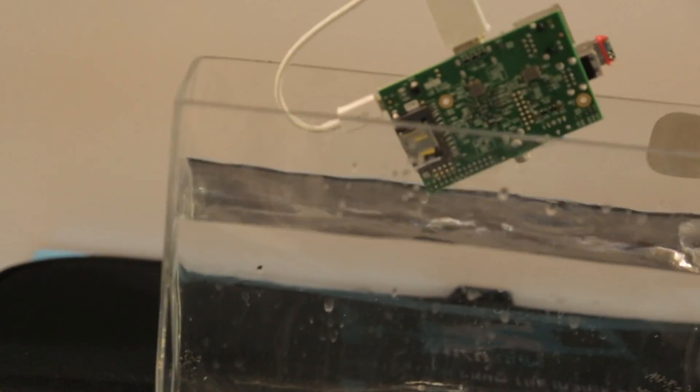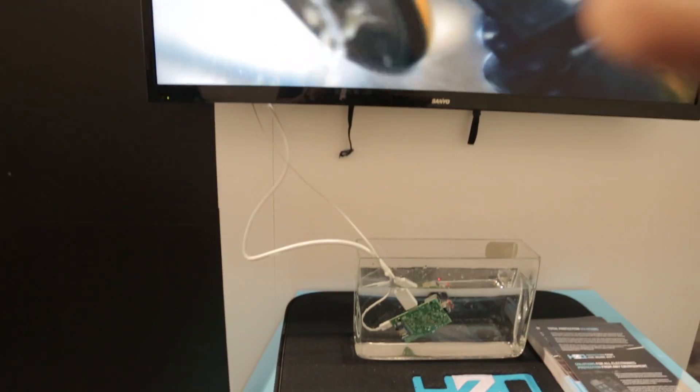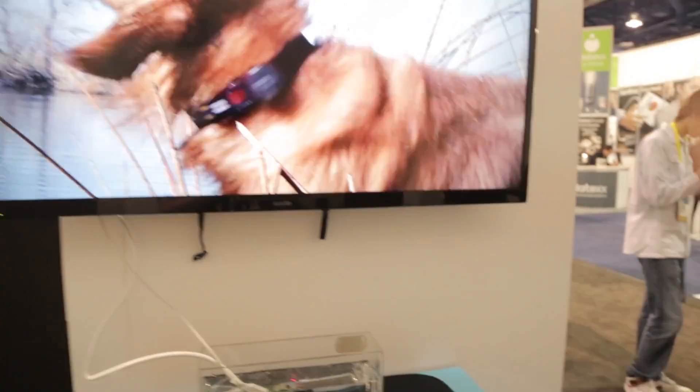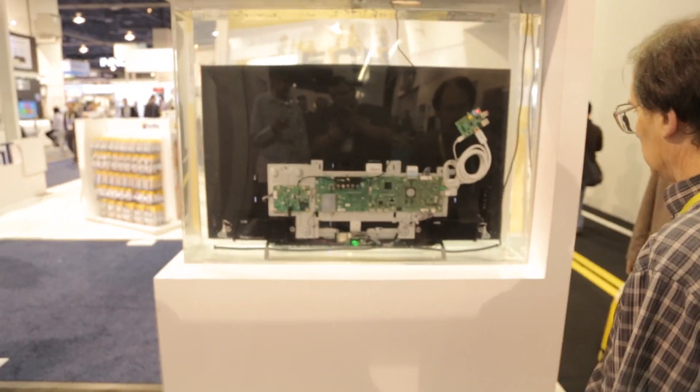Basically, they take a polymer and coat all of the components, the PCBs, any sort of connections, and they coat them with this polymer so they're completely waterproof.